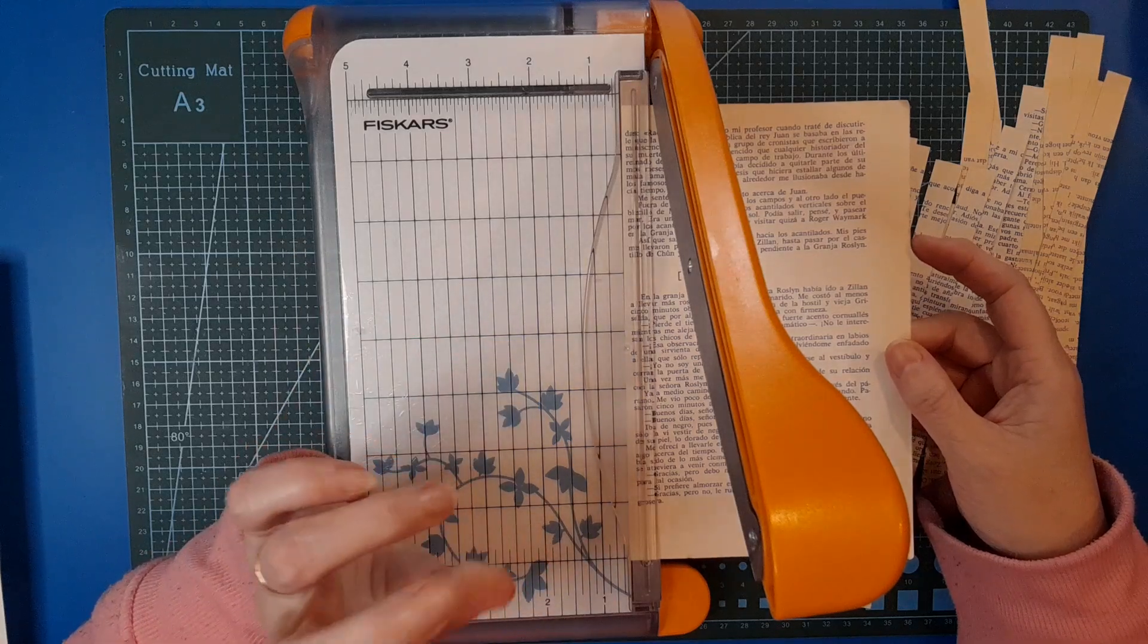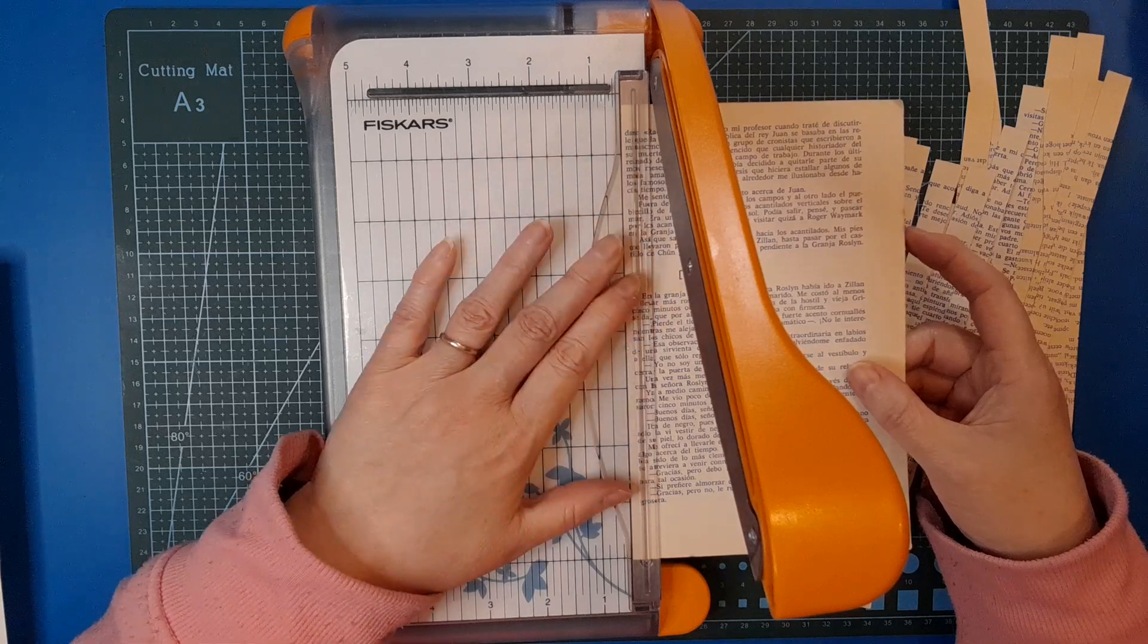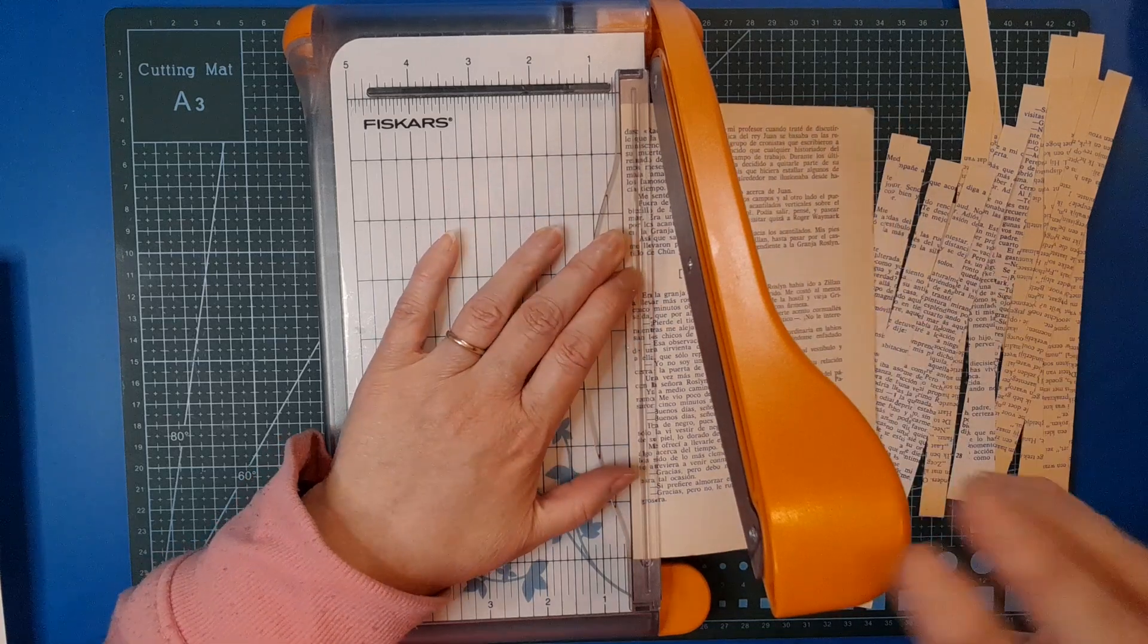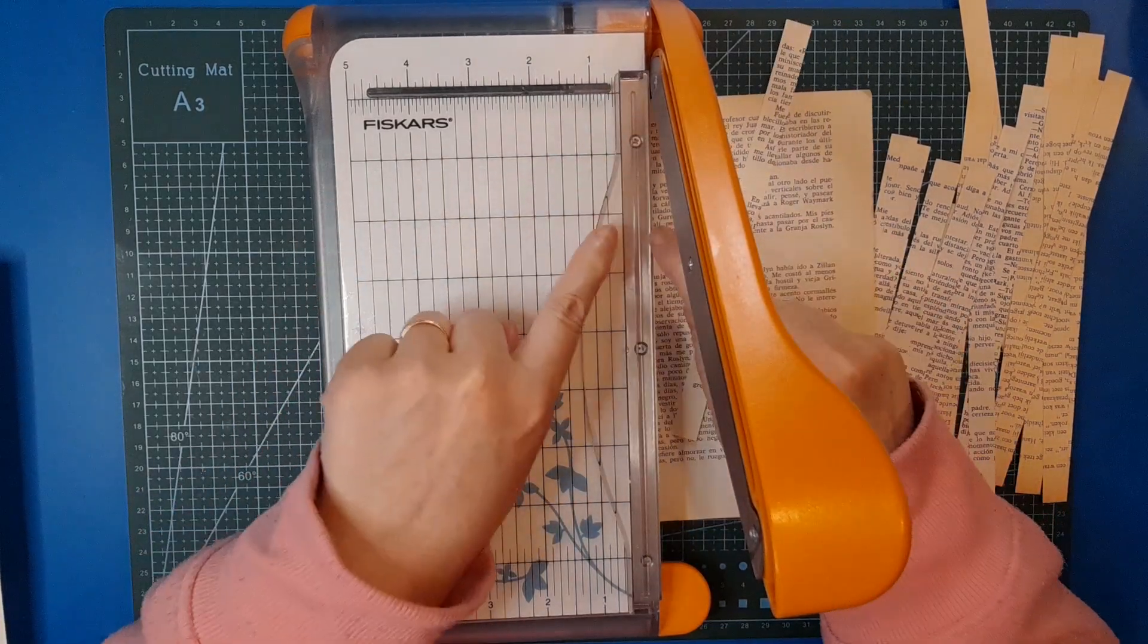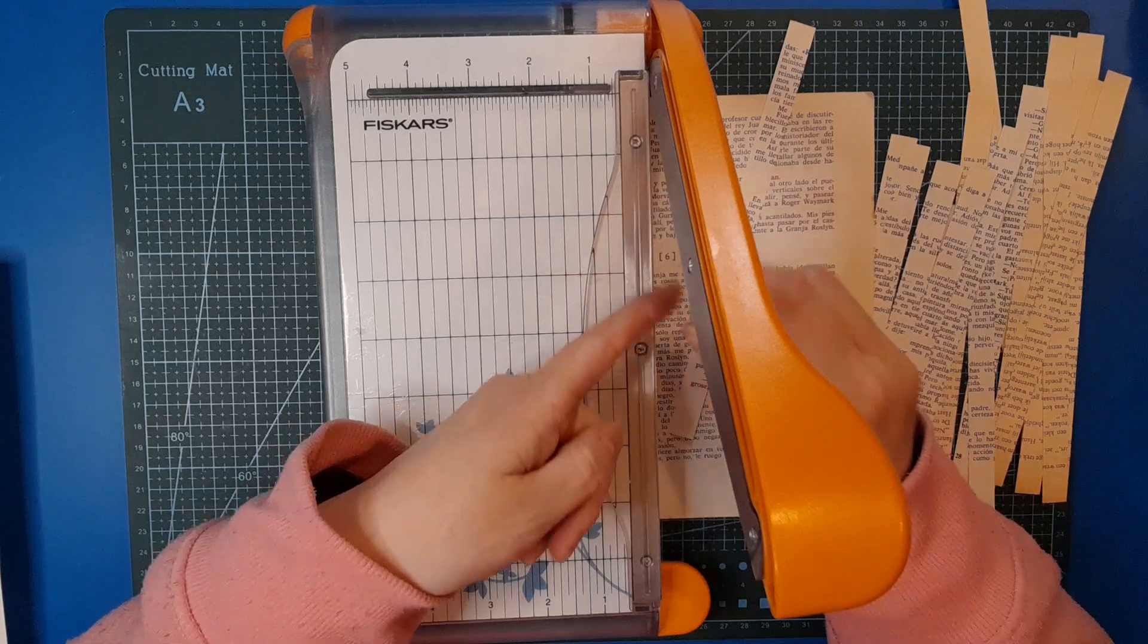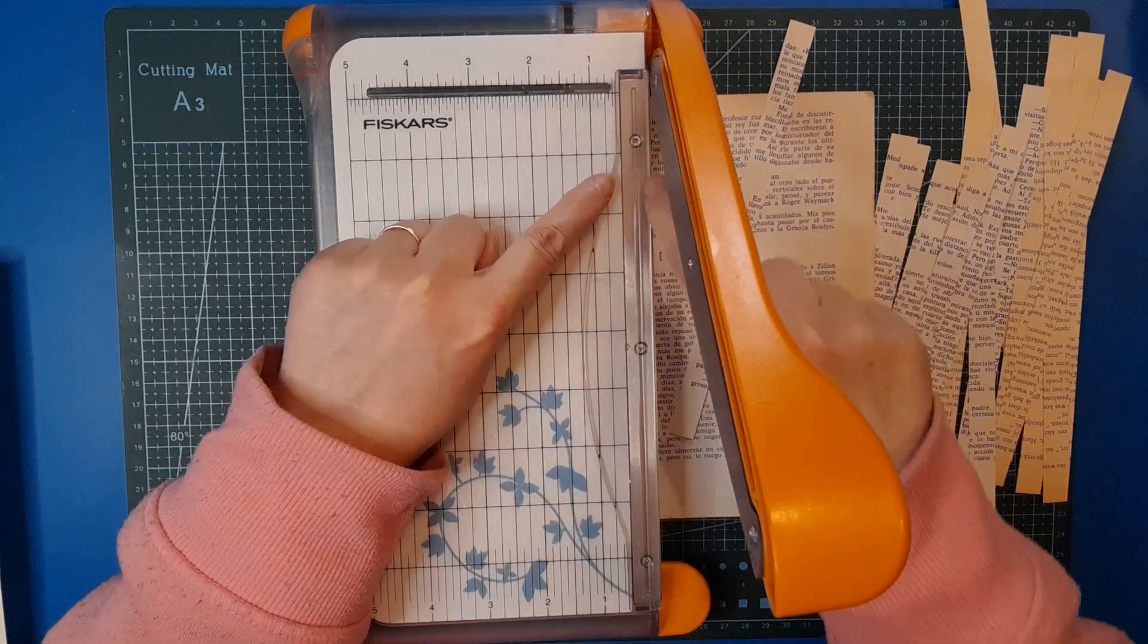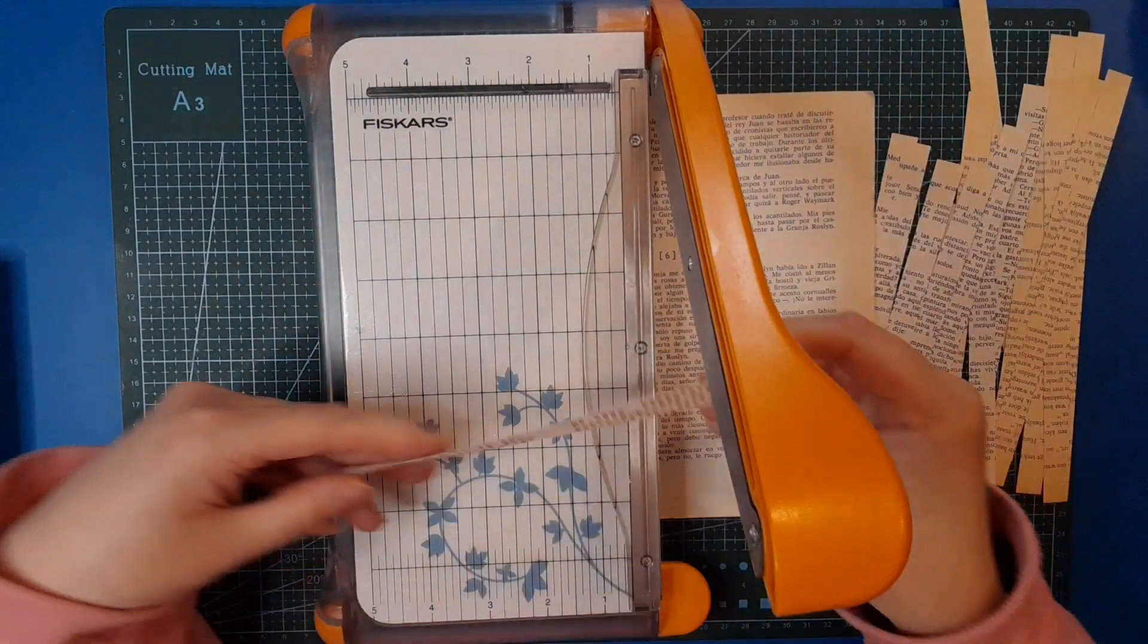First off, I cut strips of book page. My guillotine has a metal strip where you cut against that is around half an inch wide, so I just line up my book page to the edge of the metal and chop it, ending up with approximately half inch strips.